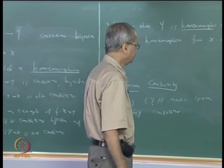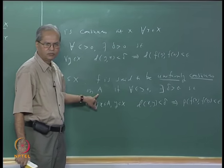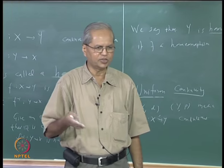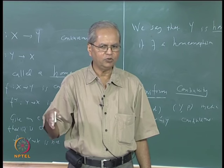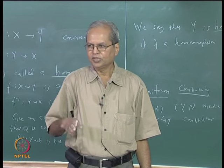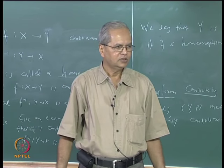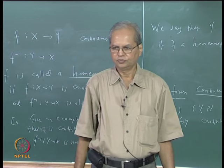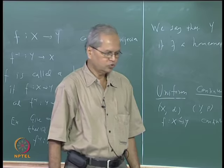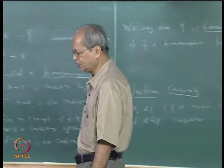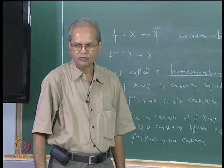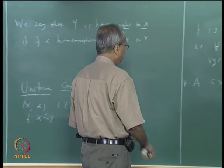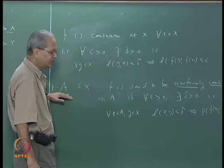If A is a singleton set, any function continuous at that point is also uniformly continuous on A. With a small modification, this also works if A is a finite set — for finite points A1, A2, ..., An, find delta1, delta2, ..., delta-n individually, then take the minimum. So every continuous function is always uniformly continuous on a finite set. Uniform continuity really matters when A is an infinite set — a function may be continuous but not uniformly continuous.